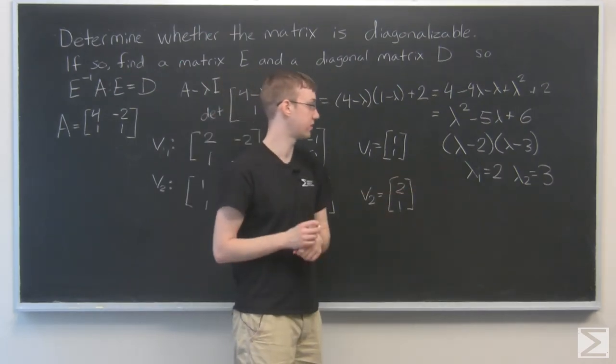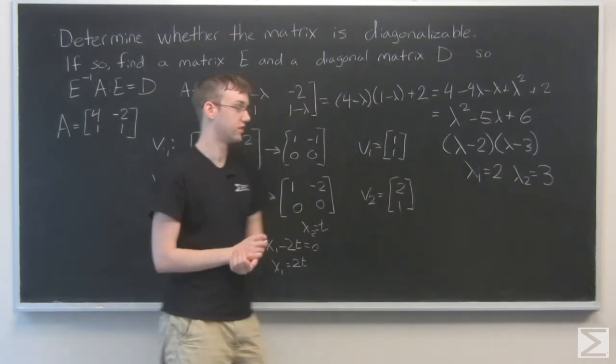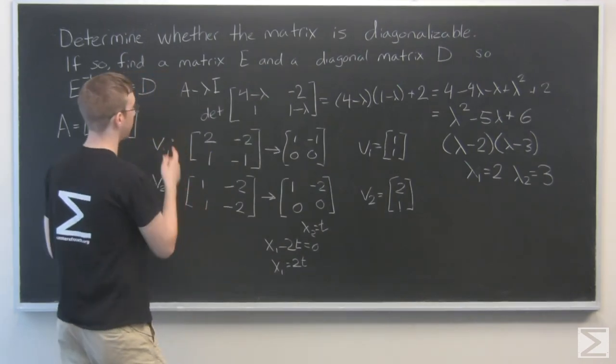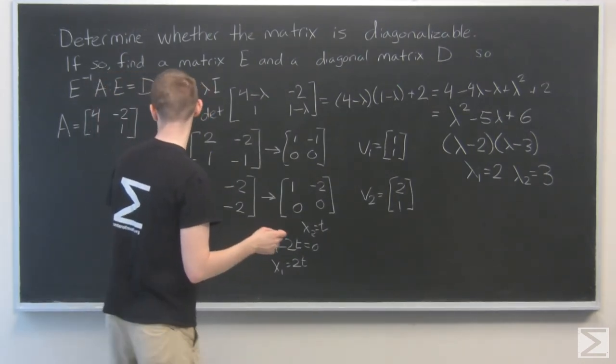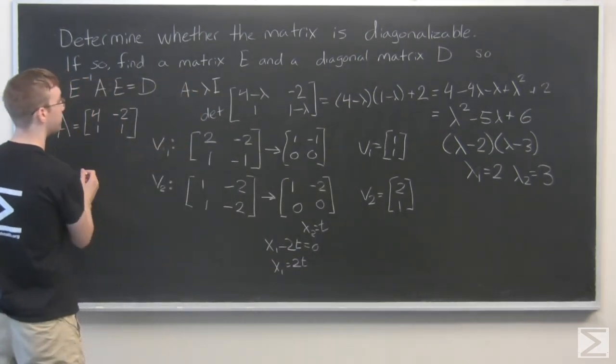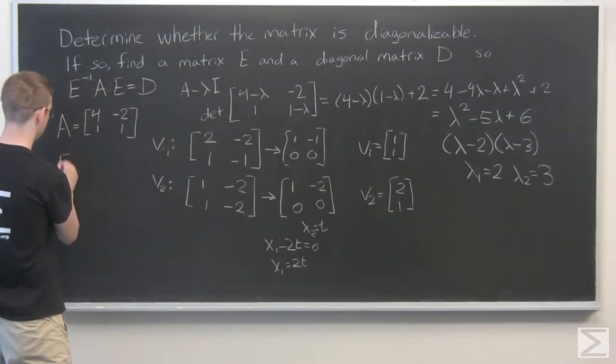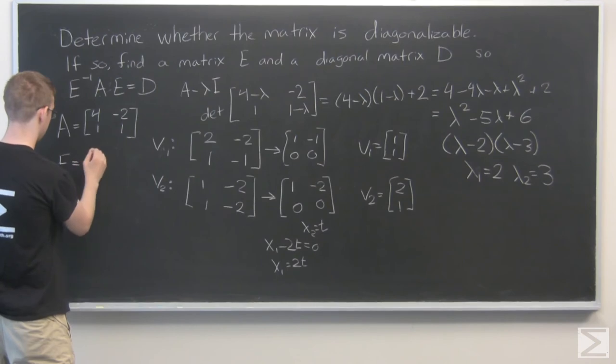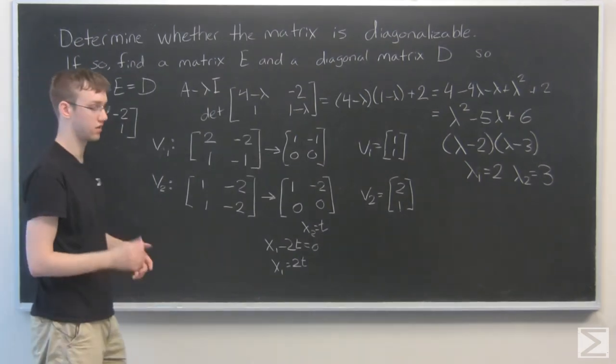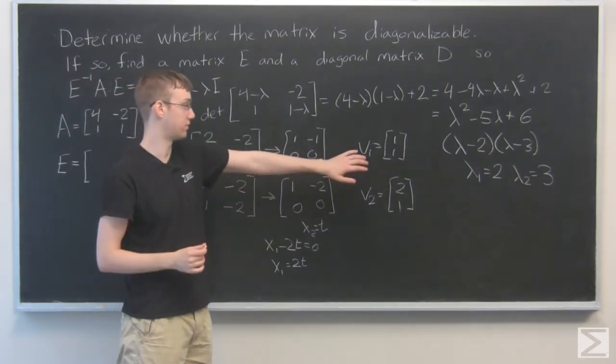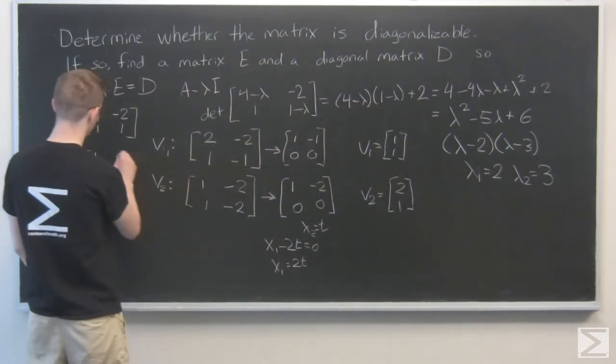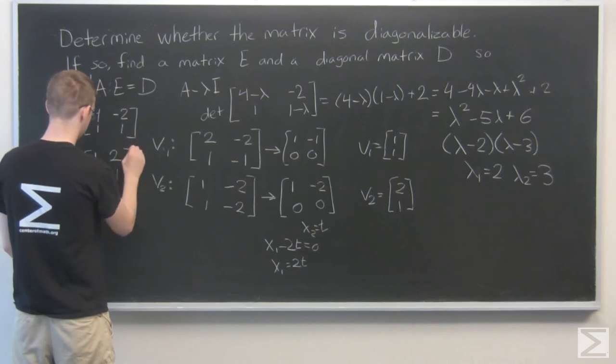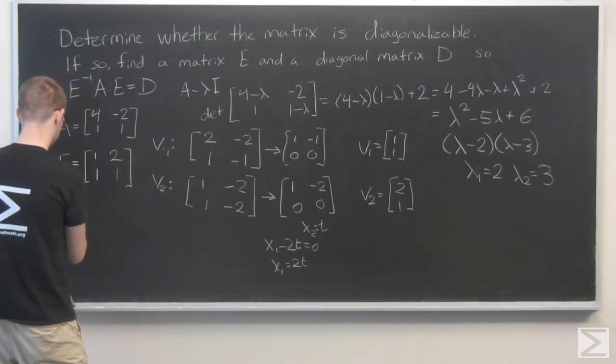So we have our eigenvalues, we have our eigenvectors. Now we can just plug them in and find our E and our D. So where's the best place to write this? I'm going to write it over here. We'll start with E. This is just the column vectors made into a matrix, so that's 1, 1, and 2, 1.